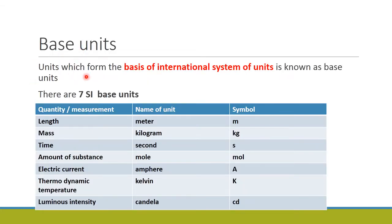Base units are the units which form the basis of the International System of Units. There are seven SI base units. Those are: length, mass, time, amount of substance, electric current, thermodynamic temperature, and luminous intensity. These are the different quantities, and for each quantity of measurement you have a respective unit.